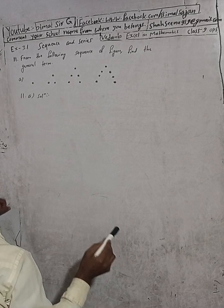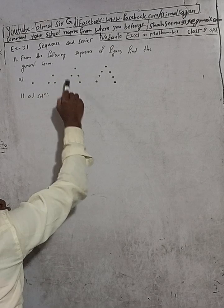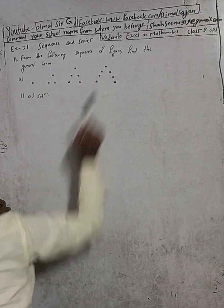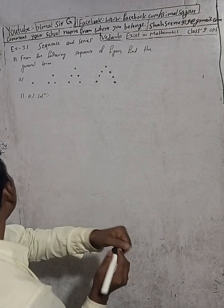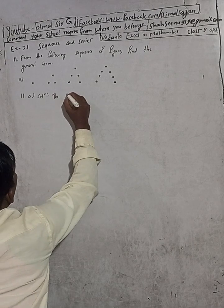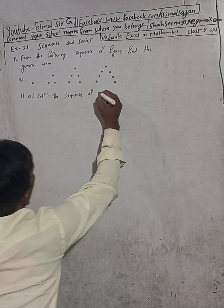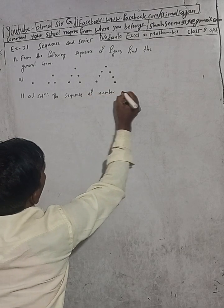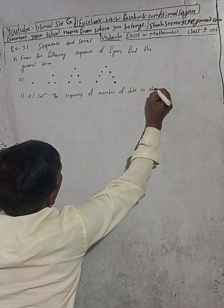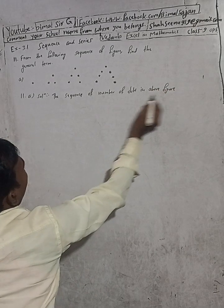That means after 1, there is 2 increased. After that this is 3, again 2 is increased. After that this is 5, so 1, 2, 3, 4, 5. After 5 again 2 is increased. So we can write the sequence of the number of dots in the above figure.